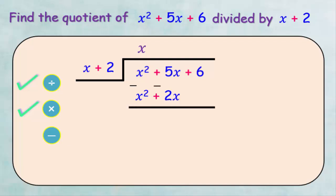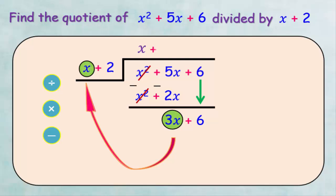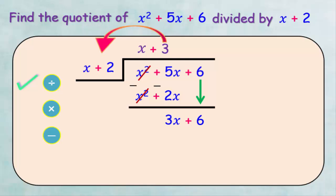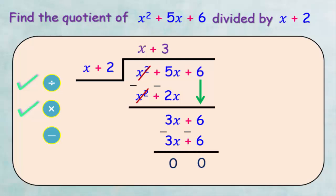The third step is to subtract x squared plus 2x from x squared plus 5x plus 6, so we get 3x plus 6. Note that the first two terms cancel. Then we repeat the steps: divide 3x by x to get 3, multiply 3 by x plus 2 to get 3x plus 6, then subtract to get 0. The quotient is x plus 3 and the remainder is 0.